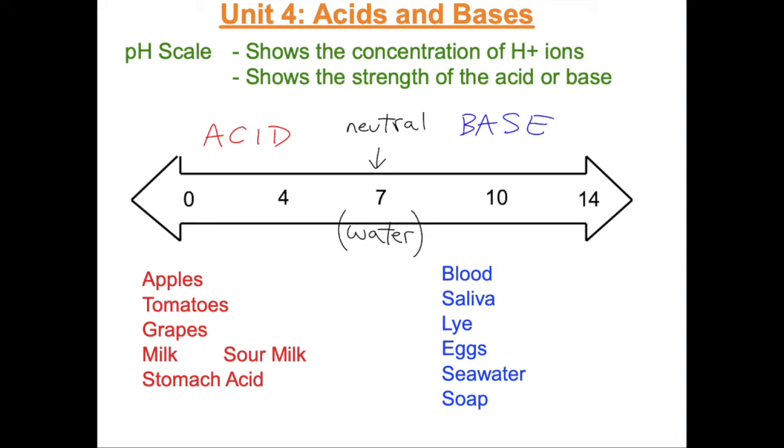We can get more information than that. If the pH is between 7 and 4, then it's called a weak acid, such as tomato juice. But if the pH is between 4 and 0, then it's called a strong acid, such as battery acid.